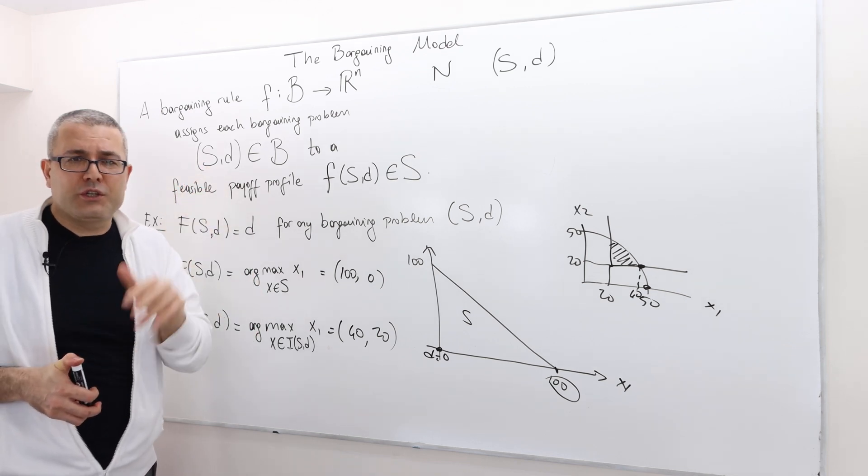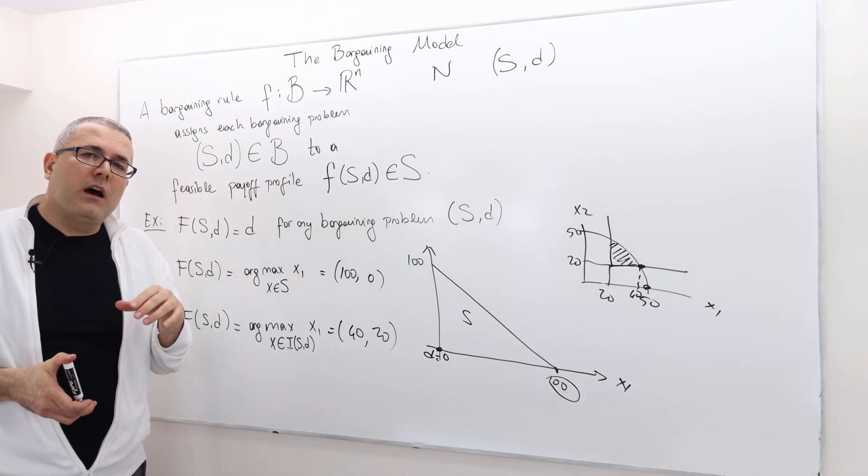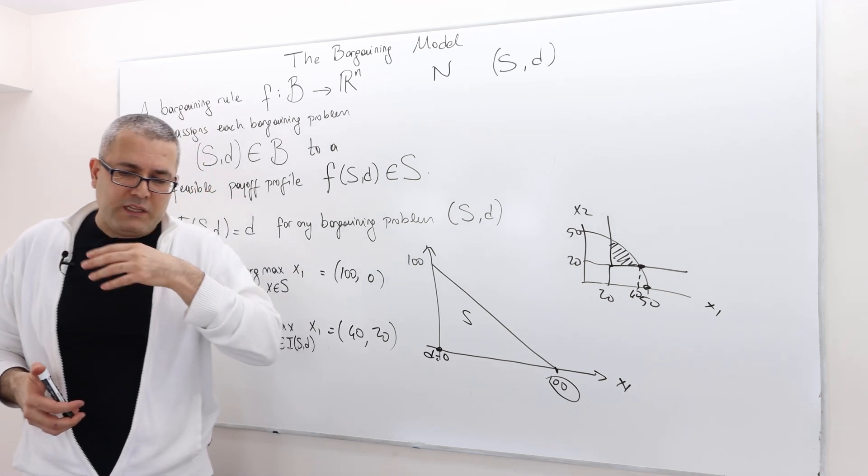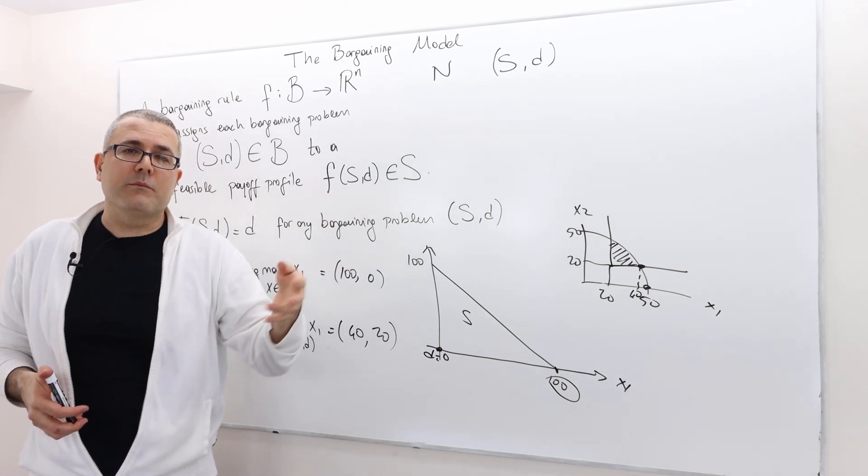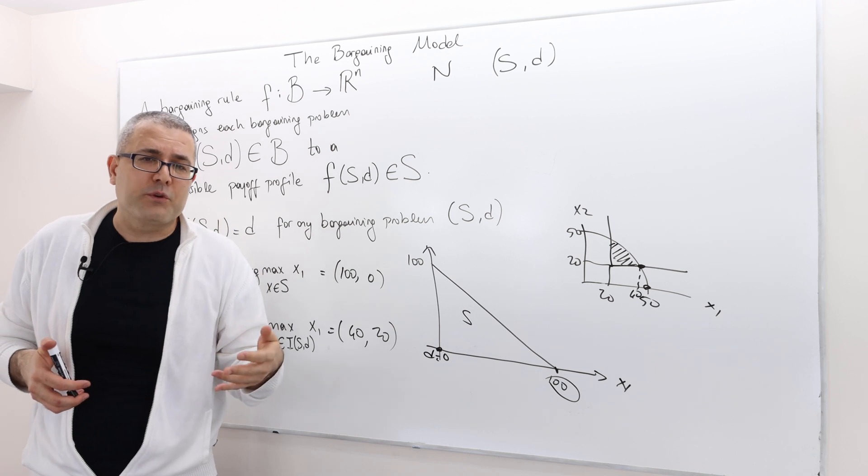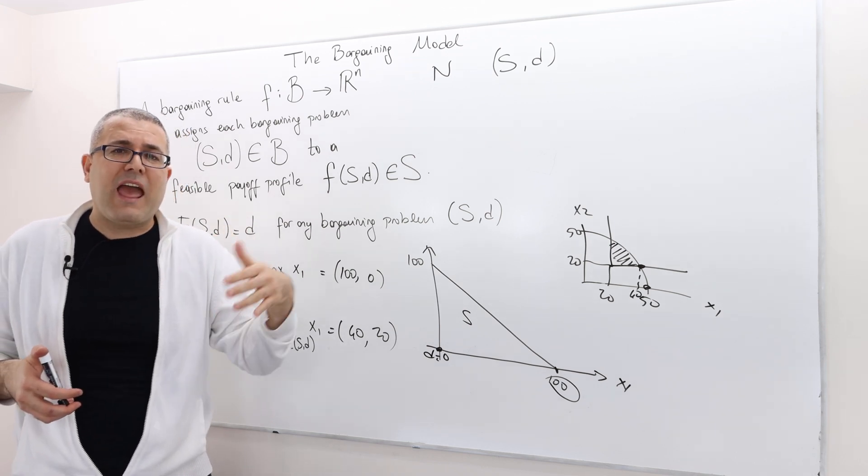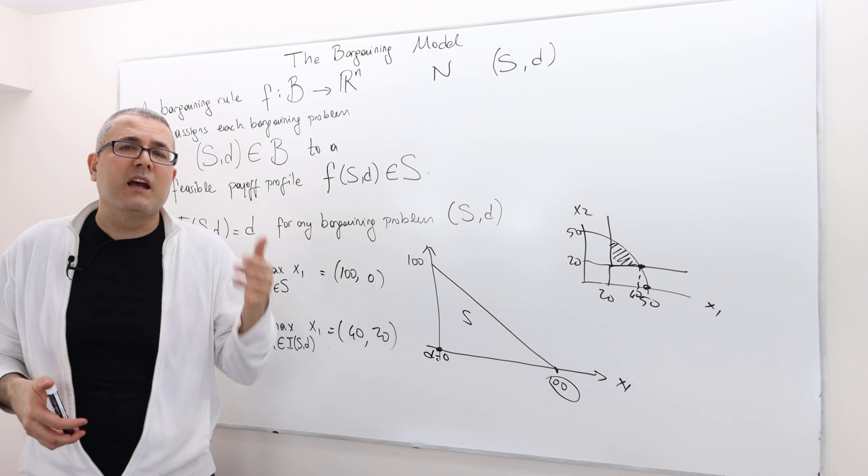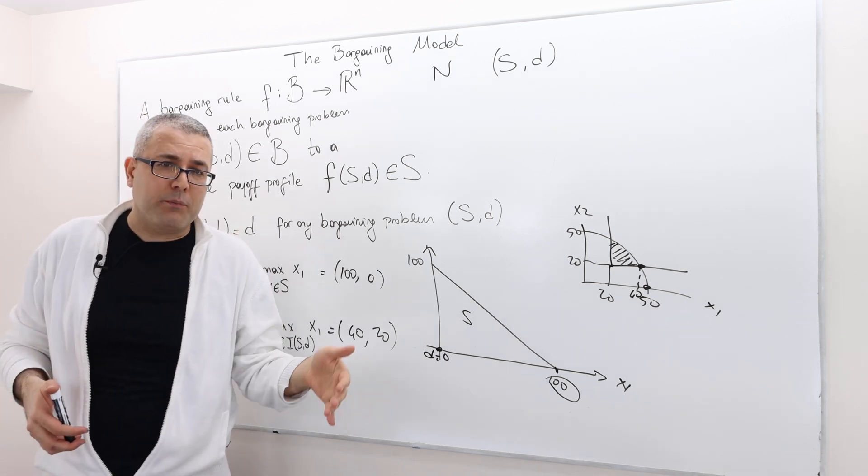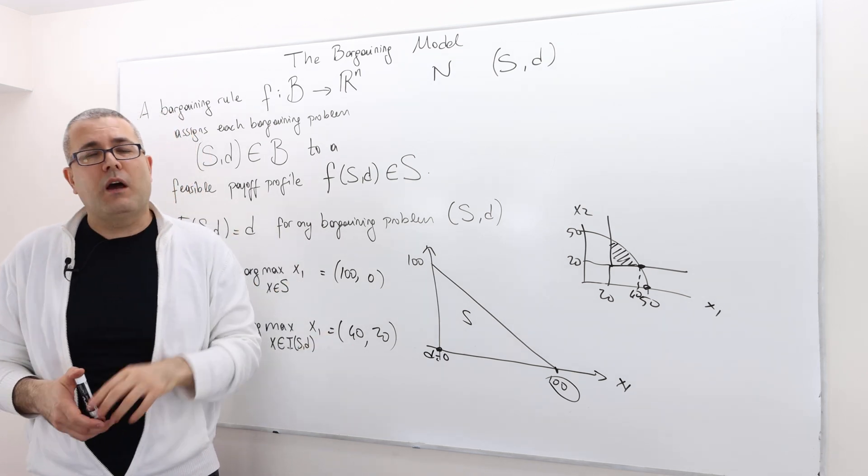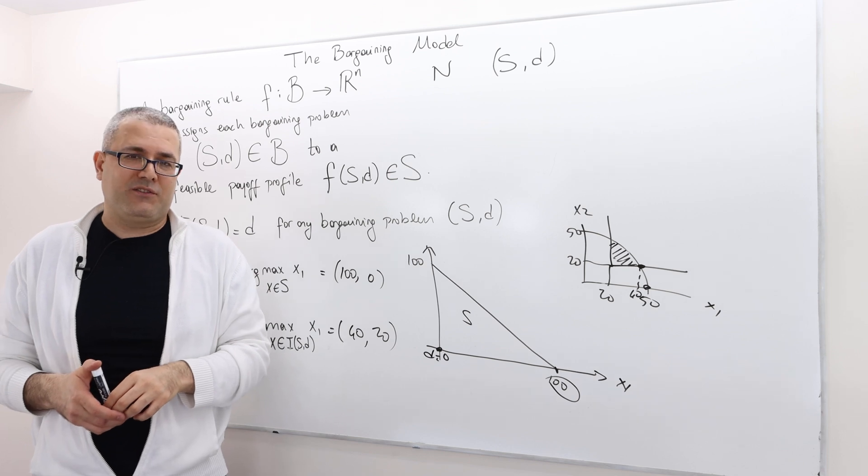What we do therefore is we define some set of axioms, which we think are nice properties that the rule should satisfy, and then try to come up with rules that will satisfy those properties. This is exactly what we're going to do next.